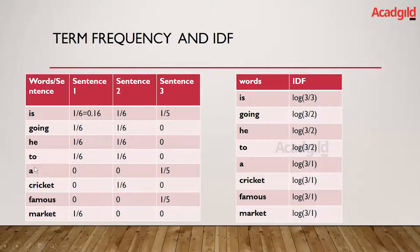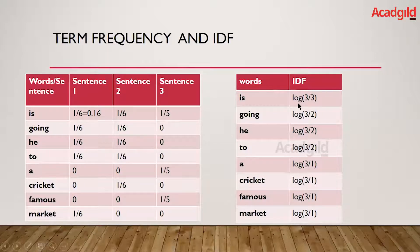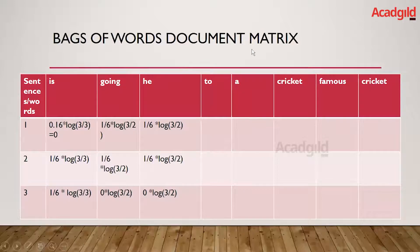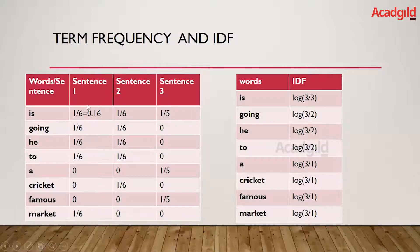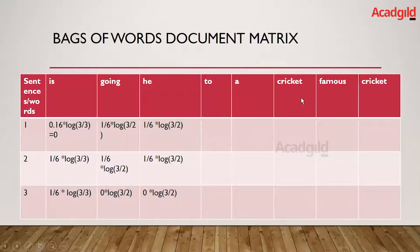The left-hand side column shows the term frequency elements of each word with respect to the sentences, and the right-hand table gives the inverse document frequency values. We need to combine these by multiplying. For example, the TF of 'is' in sentence one is 0.16, and its IDF is log(3/3), which equals zero — so 0.16 × log(3/3) gives zero.